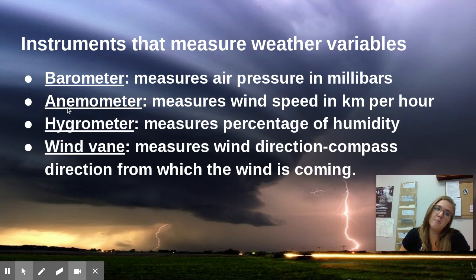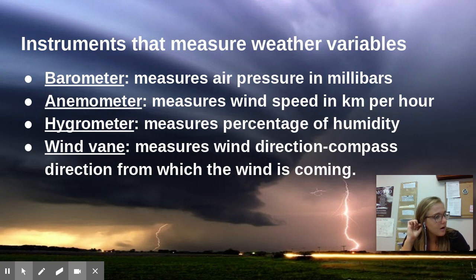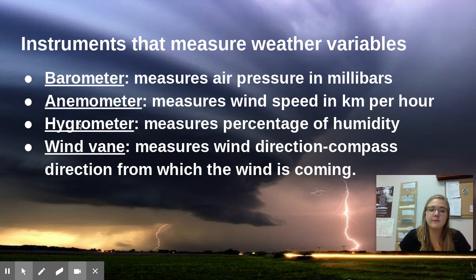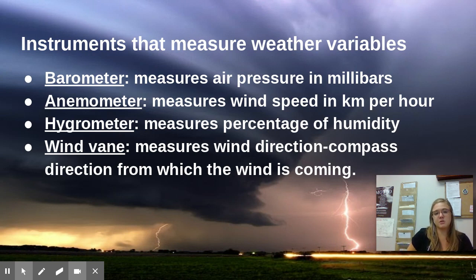The anemometer measures wind speed in kilometers per hour. Then we have the hygrometer — an easy way to remember that this one measures humidity or water in the air is the prefix 'hygro,' which is very similar to 'hydro,' making people think of water. Next, we have the wind vane, which you've probably seen before especially in decorations. This measures wind direction, which is the compass direction from which the wind is coming.